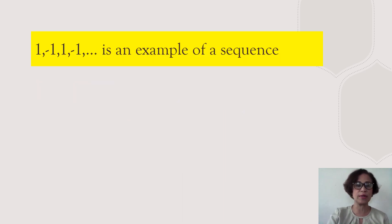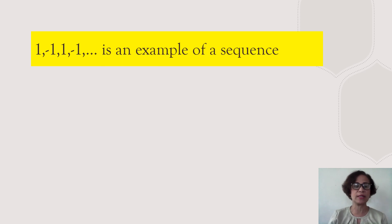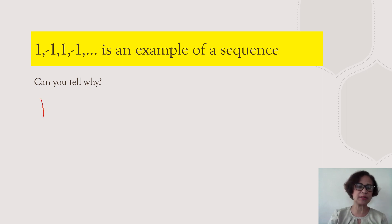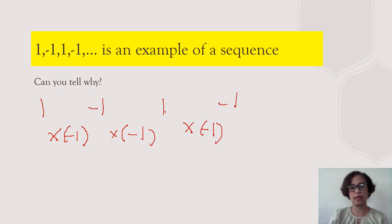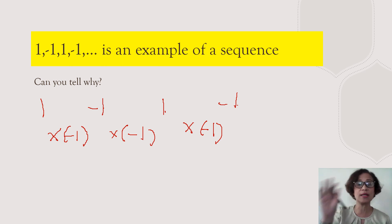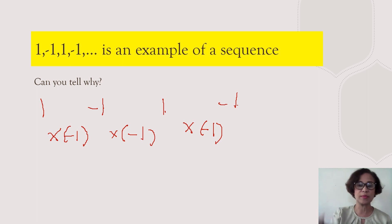Now let's go to the second one: 1, negative 1, positive 1, negative 1 — also an example of a sequence. Can you tell why? Again, it follows a pattern. 1 is multiplied by negative 1 to get negative 1. Negative 1 multiplied by negative 1 gives positive 1, and multiplied again by negative 1 gives negative 1. So there's a specific order or rule to come up with the terms of this sequence.